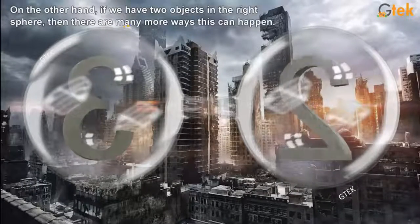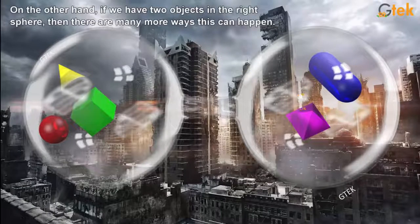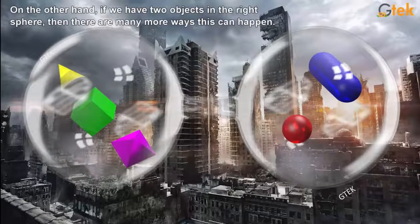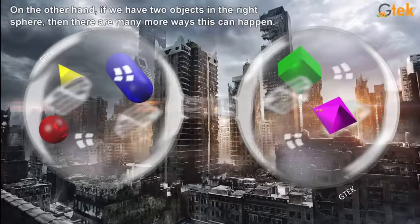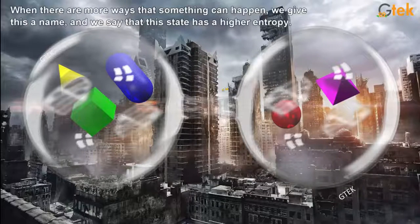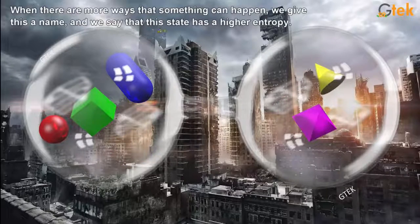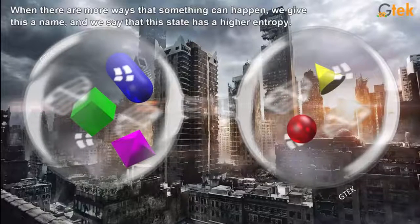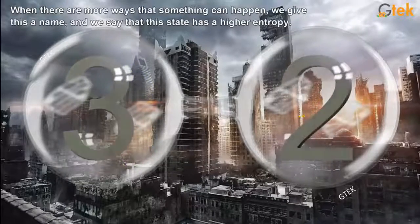If we want to make a three-to-two combination, if we have two objects in the right sphere, then there are many more ways this can happen. These are the combinations. When there are many more ways that something can happen, we say that this state has a higher entropy.